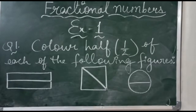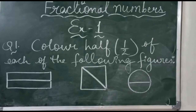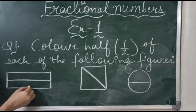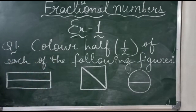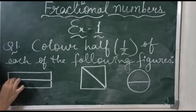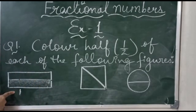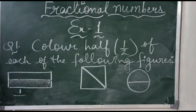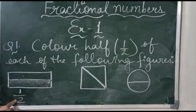Now we will learn Exercise Number One of Fractional Numbers. The first question is: color half of each of the following figures. Color half means two parts are there. This is the shape of a rectangle. I am filling in half the color. One is the whole — we will write on the top — and below the line we will write the number of parts, which is two. So one by two is called half.